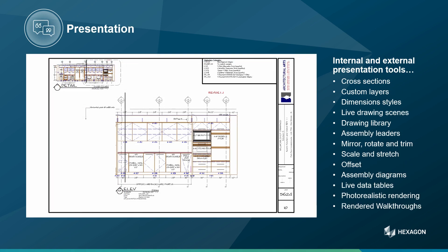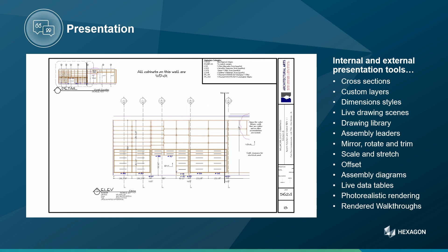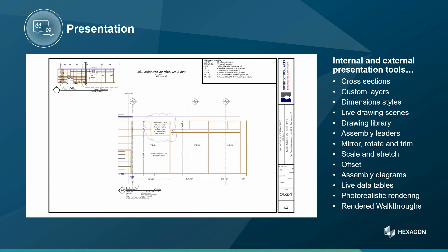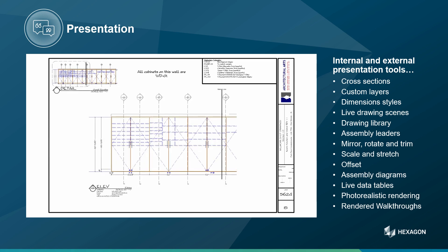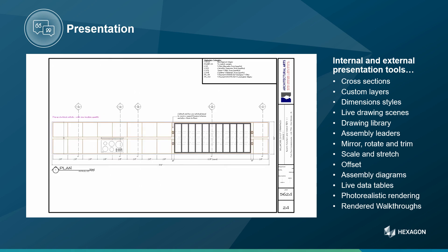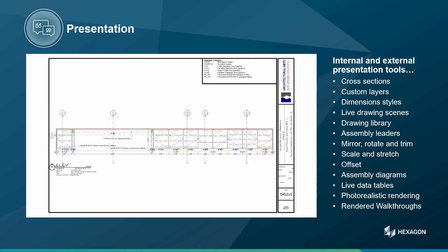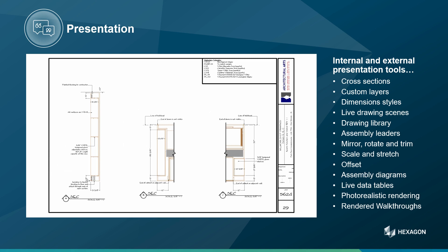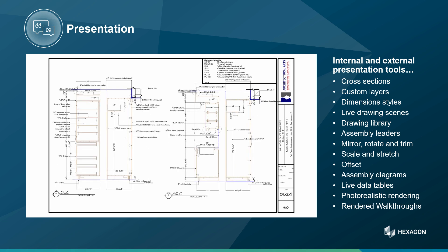Properly communicating design intent back to architects when engineering commercial cabinetry can be a challenge. Having the proper 2D annotation tools to communicate this information is critical. CabinetVision has a very comprehensive 2D CAD system, allowing the generation of first-class architectural submittals. And because CabinetVision is also the engineering tool, it has a large amount of data which can be easily incorporated into this communication. These example shop drawings are a great example of the comprehensive submittals required by architects that can be generated in CabinetVision.